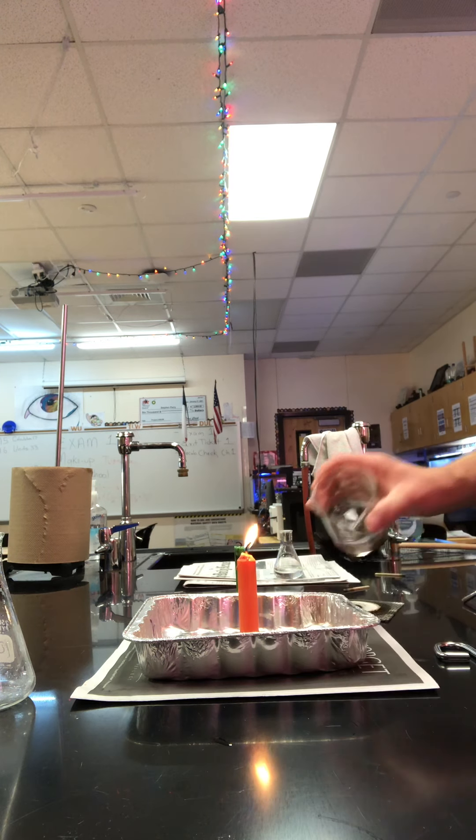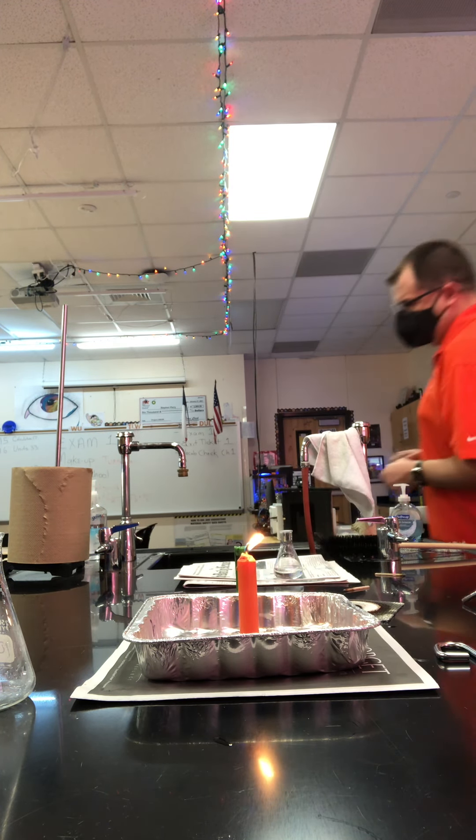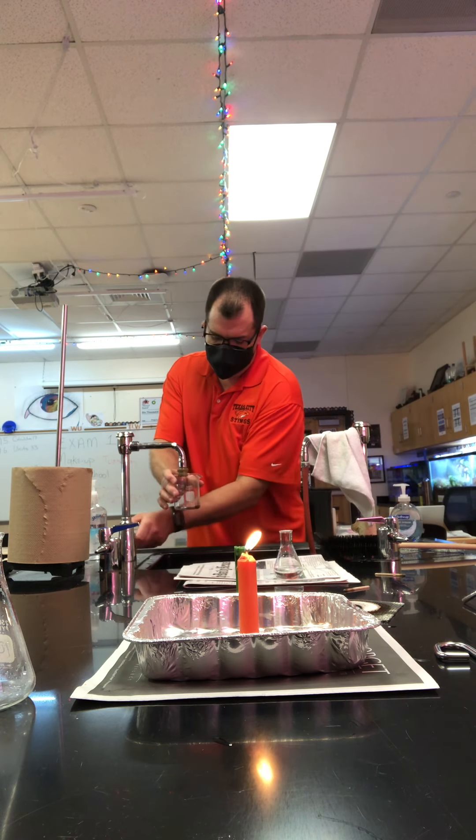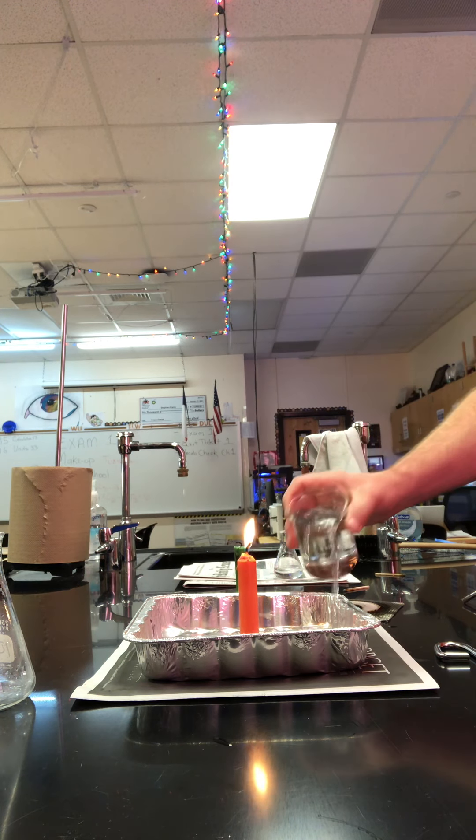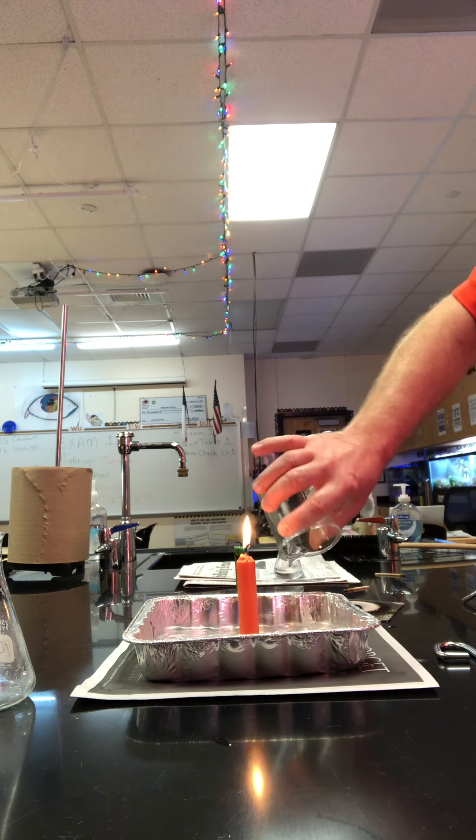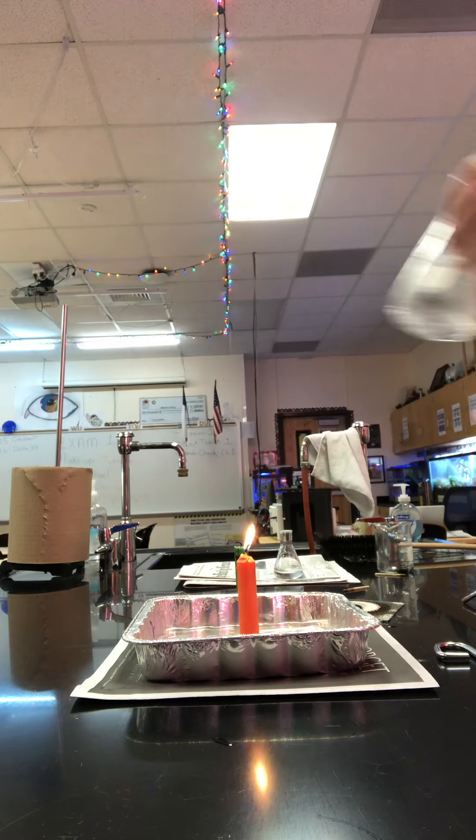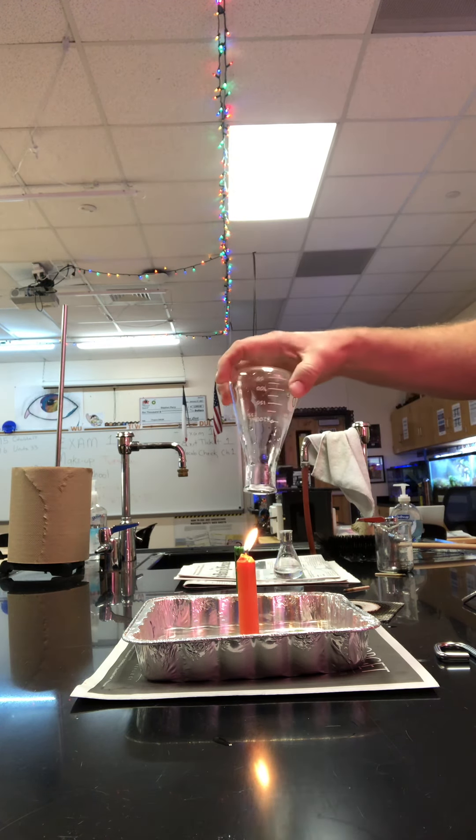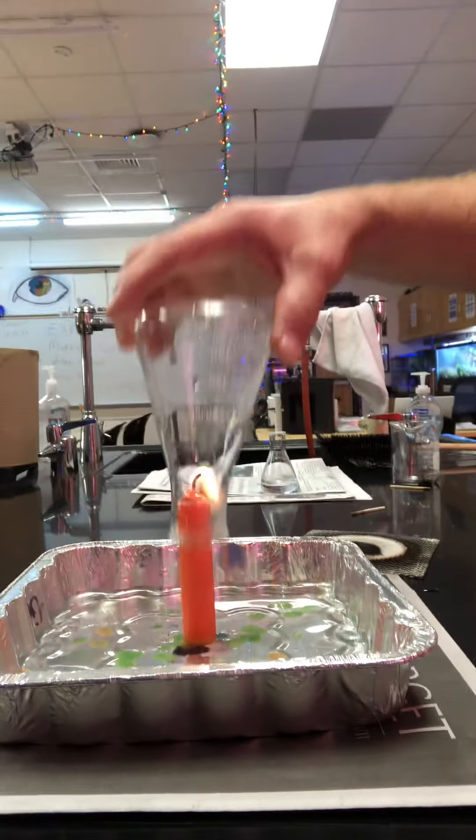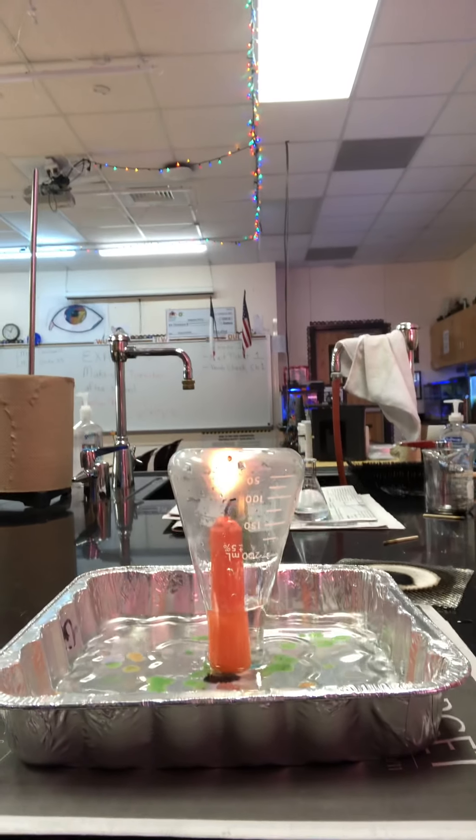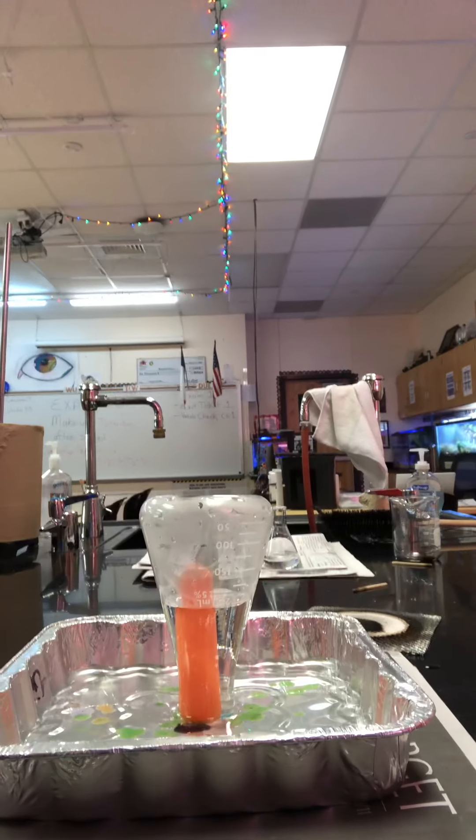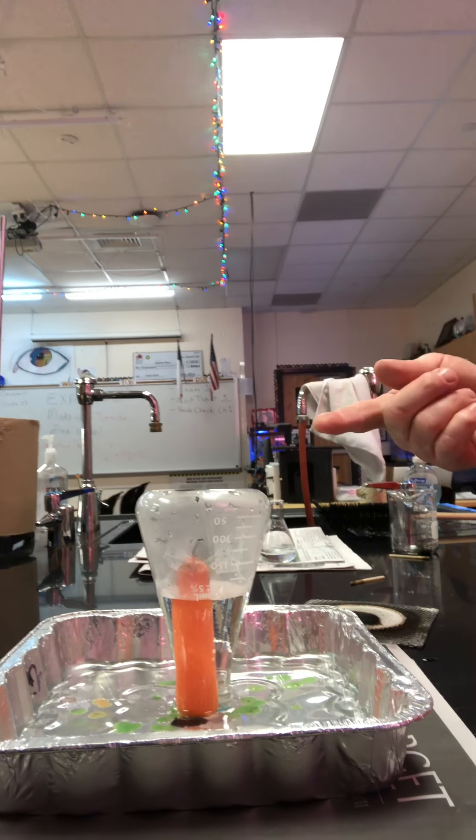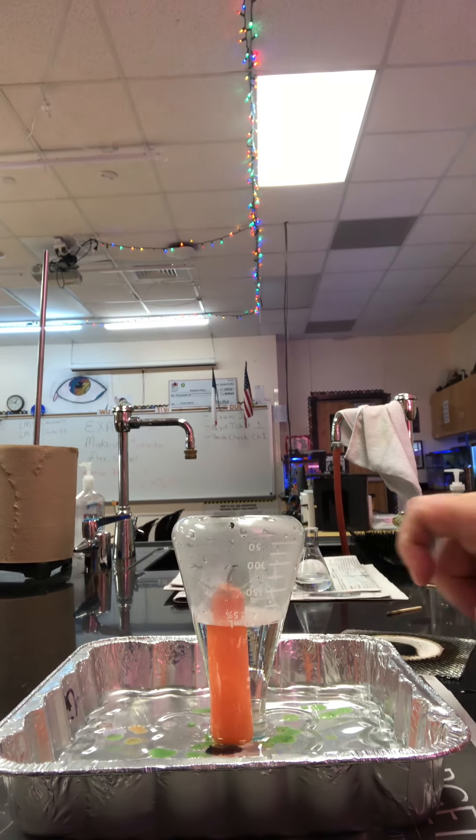So now we're going to put water in the pan. And then we have an empty Erlenmeyer flask. I'm going to stick this over the candle and watch what happens. So flame went out. The water, the flame is burning, consuming the oxygen, turning it into CO2. You can see the water rising up.